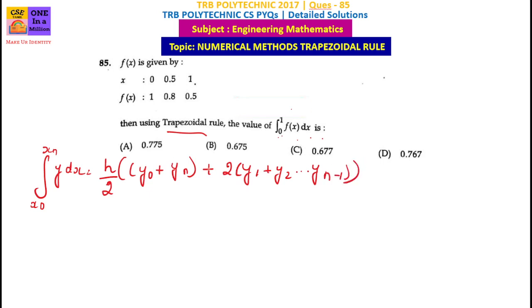So, the remaining terms are all the same. First, y0 and yn are given. Next, the remaining terms are multiplied by 2. This is the trapezoidal rule. Actually, this rule is very easy in numerical methods.